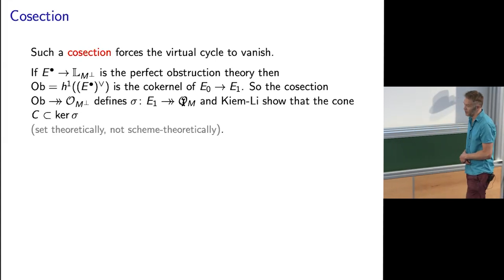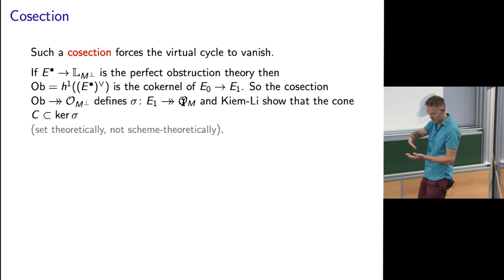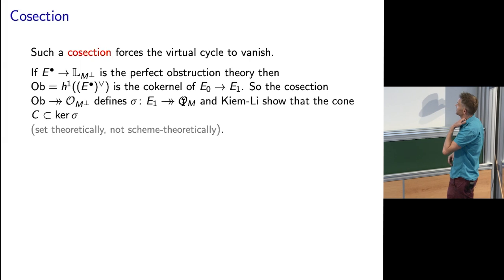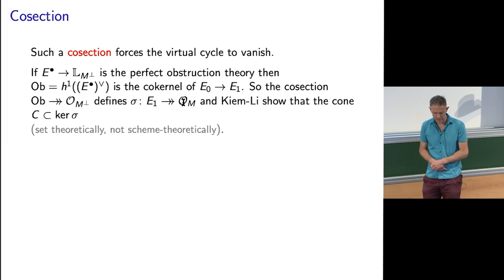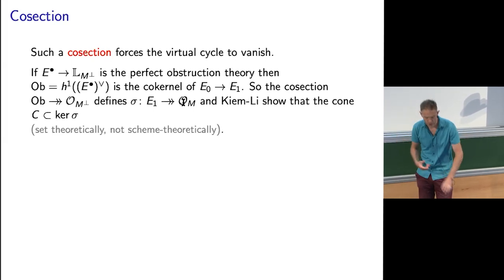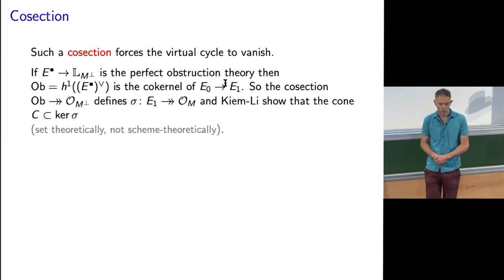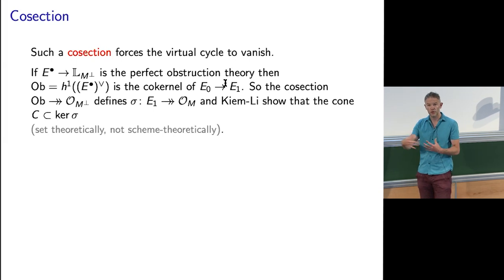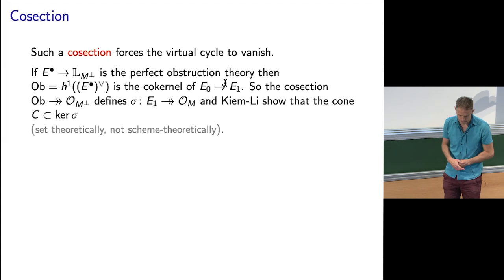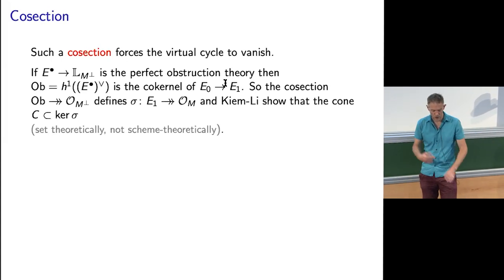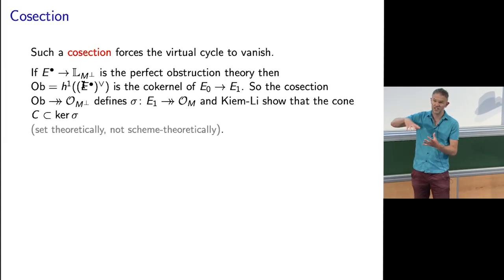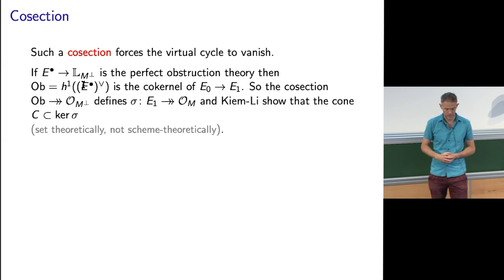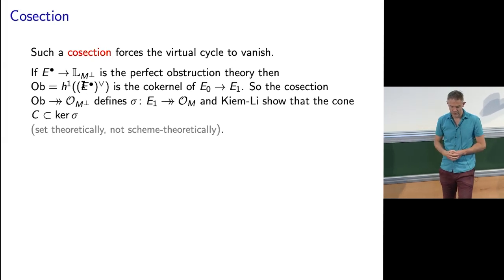What Kiem and Lee do is they show that the cone — if you remember the graph made vertical of the section — lies in the kernel of this co-section. Just the existence of a co-section forces the cone to lie in its kernel. The obstruction space is the co-kernel of the derivative of the function here, meaning that to leading order as you move off the moduli space, the section takes values not in E1, but in the kernel of E1 going to ob.